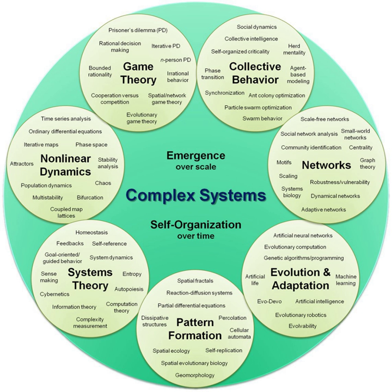Complex systems are systems whose behavior is intrinsically difficult to model due to the dependencies, competitions, relationships, or other types of interactions between their parts or between a given system and its environment.